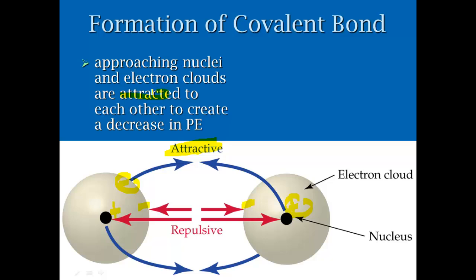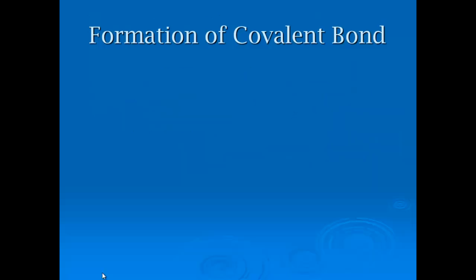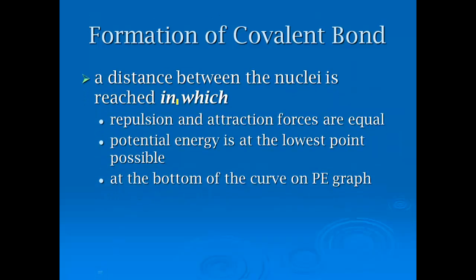Approaching nuclei and electron clouds are attracted to each other in an attempt to decrease potential energy, but you also have repulsion. The lowest energy point is the bond length, where the attractive and repulsive forces are equal and balance each other out. The potential energy is at its lowest at the bottom of the curve on the PE graph — you should be familiar with that graph and able to discuss what happens at all three places.